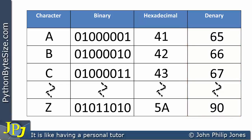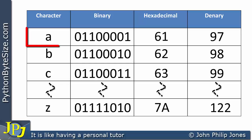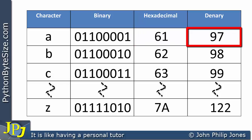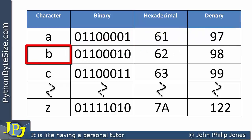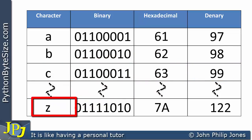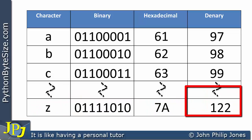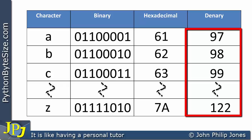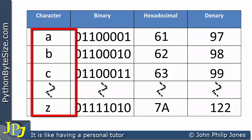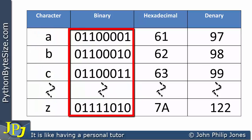Every character has their own binary pattern to represent them. If we type capital A it has the value 65, but if we look at the next table, lowercase a has a different binary pattern and its value in decimal is 97. Lowercase b is one bigger at 98, lowercase c is 99, and we can go all the way to lowercase z, which in our number system is 122. The key principle is that every character has their own binary pattern and there is a definite sequence.